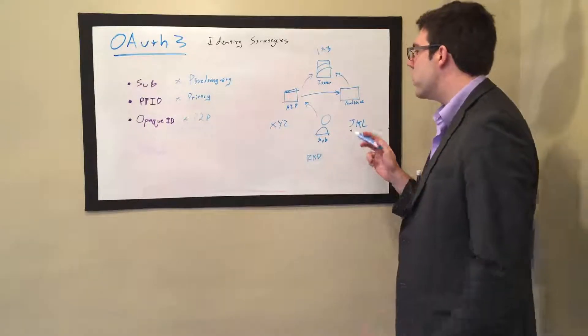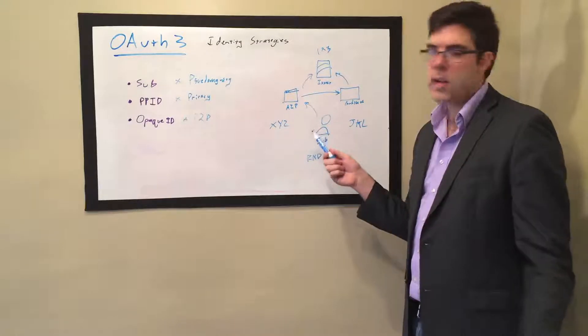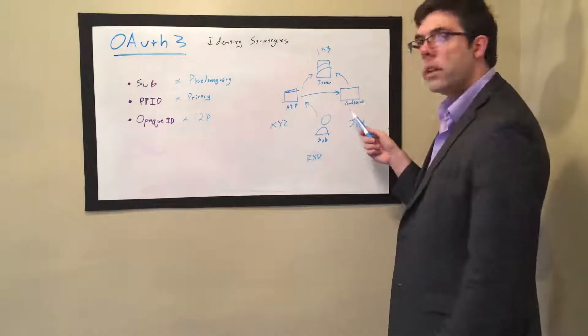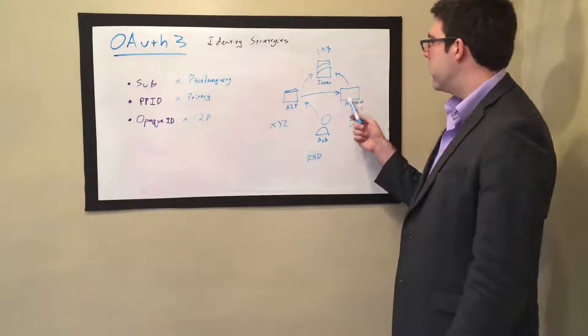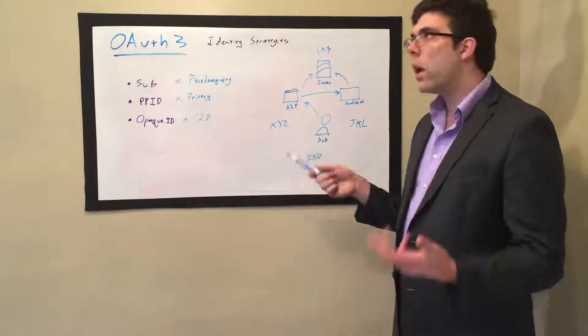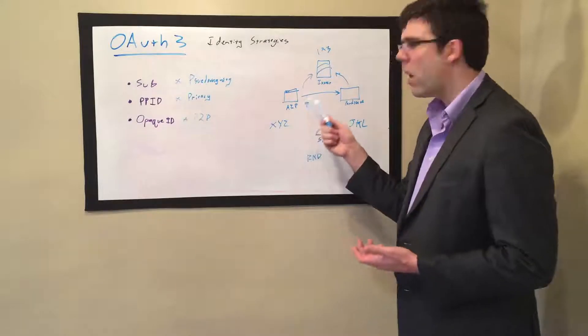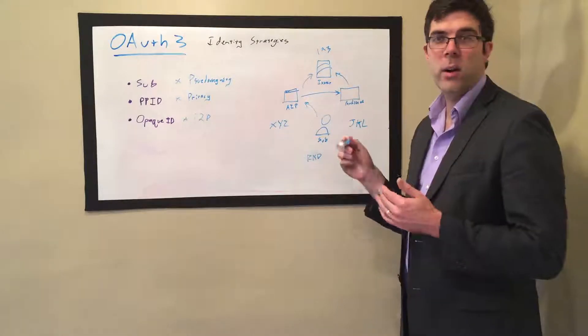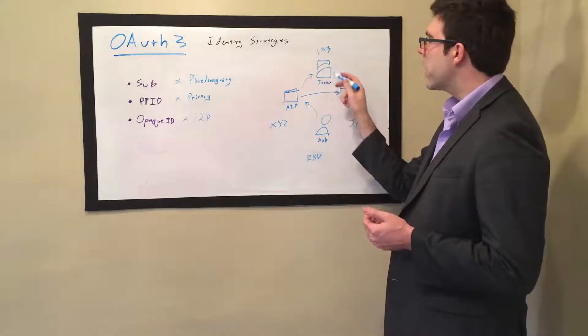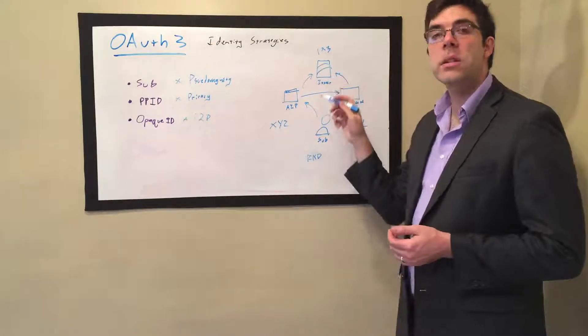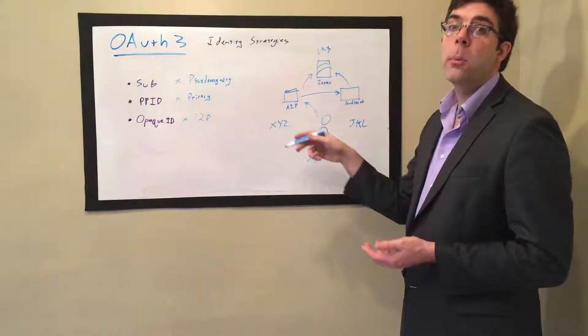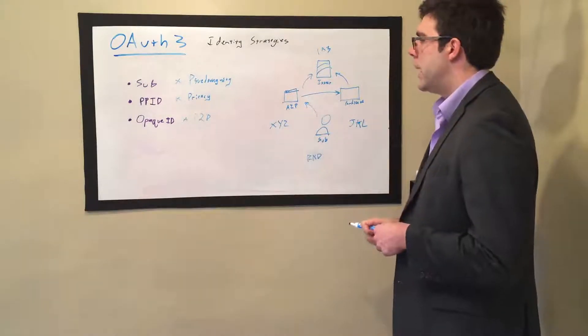So the only relationship that this thing knows is that for the session, X, Y, Z is RND. The AZP knows that. And the audience knows that JKL is RND, but the audience doesn't know what I'm described as on the authorized party. But you can see it's no longer a peer-to-peer model where it's very quick and efficient. There's a little bit of excess here because it has to do this round trip through the issuer in order to exchange the opaque ID token for a PPID token.